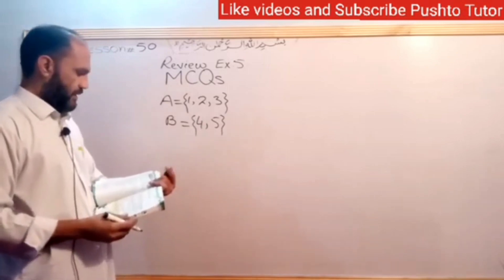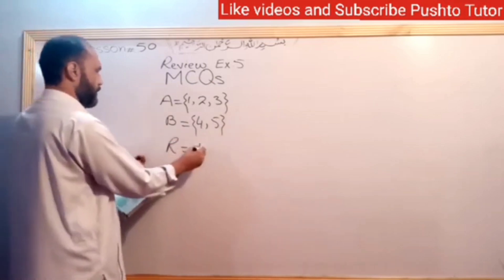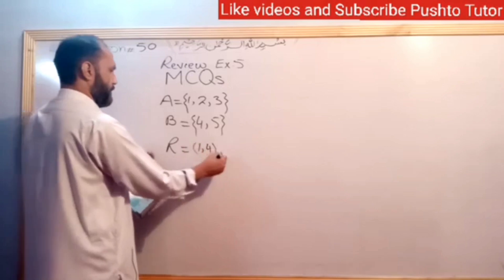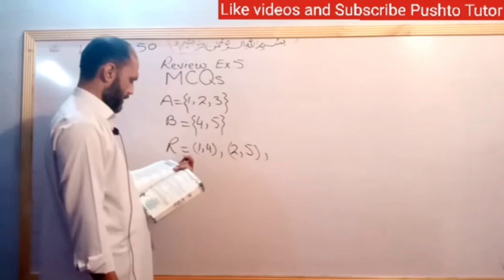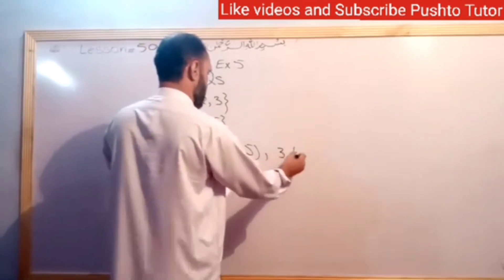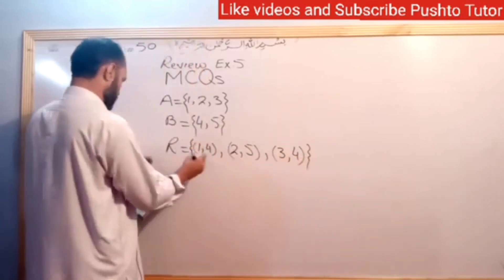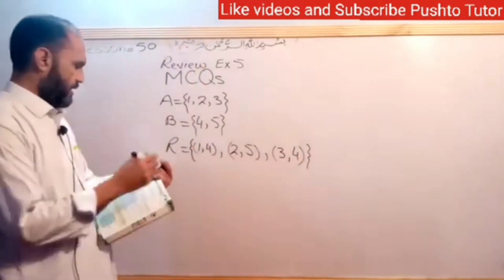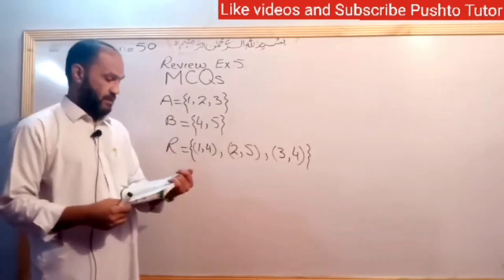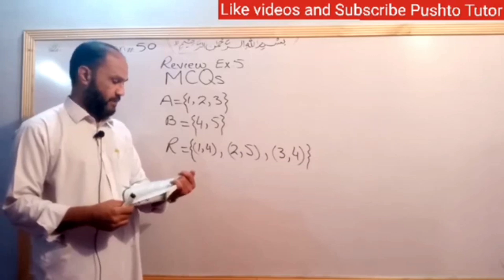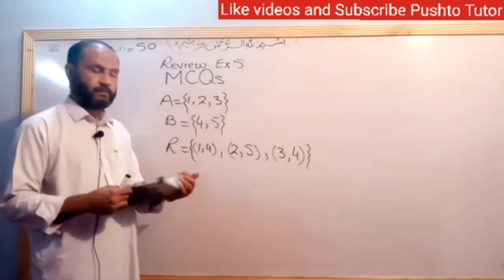and the relation R is equal to {(1,4), (2,5), (1,4), (2,5)} or the relation {(3,4)}, then R is: (a) a 1-to-1 function from A to B, (b) not a function, or (c) an onto function from A to B.